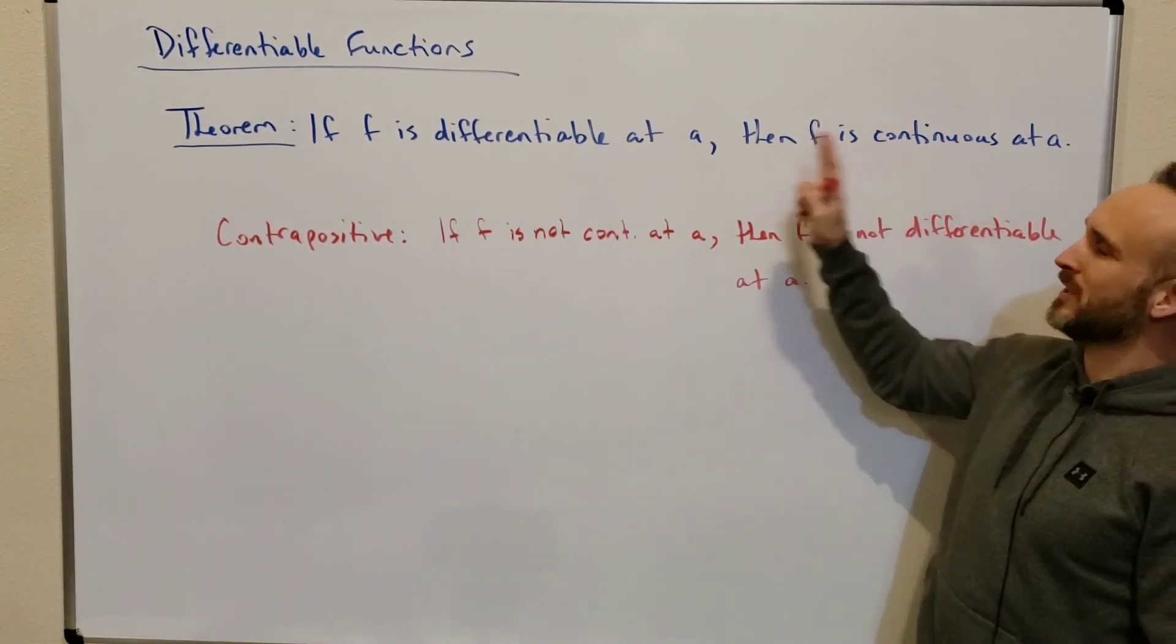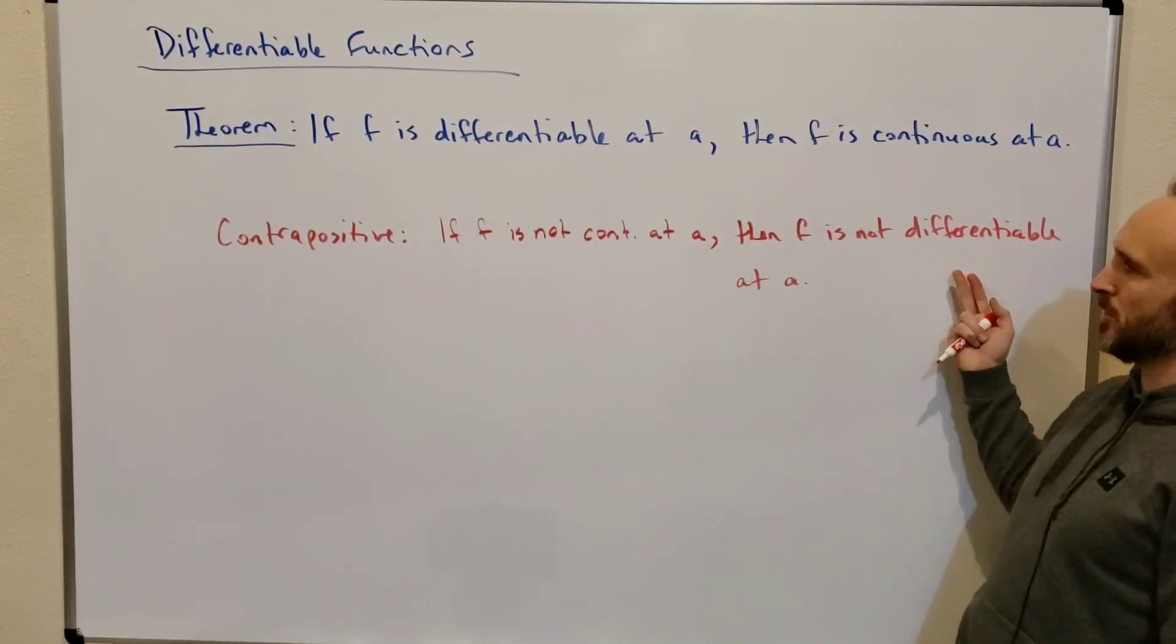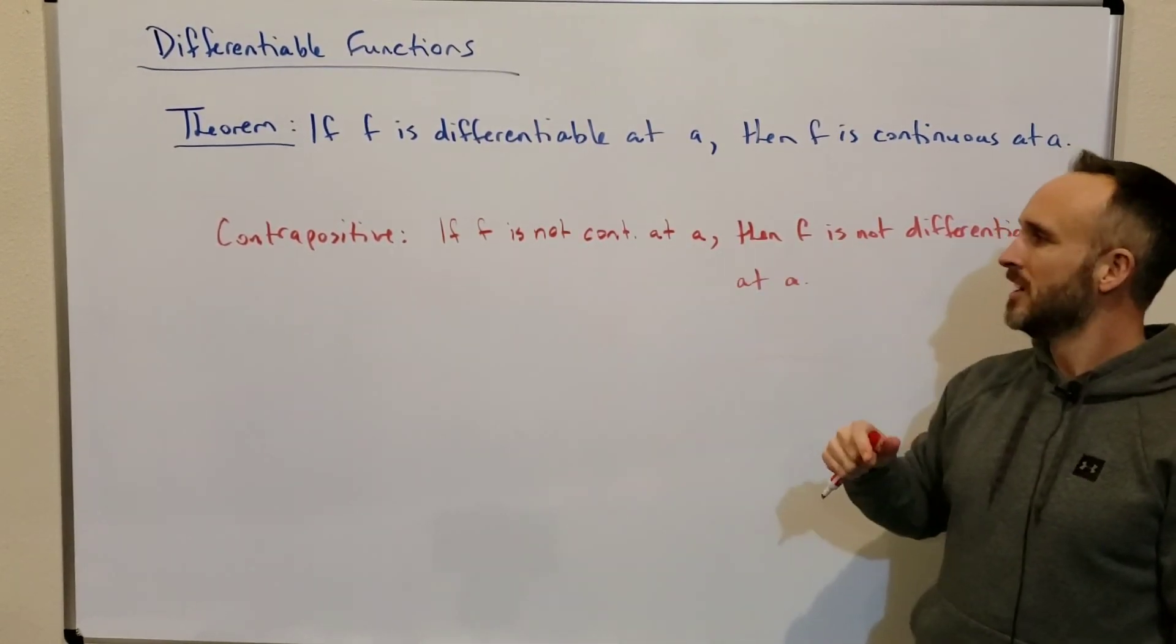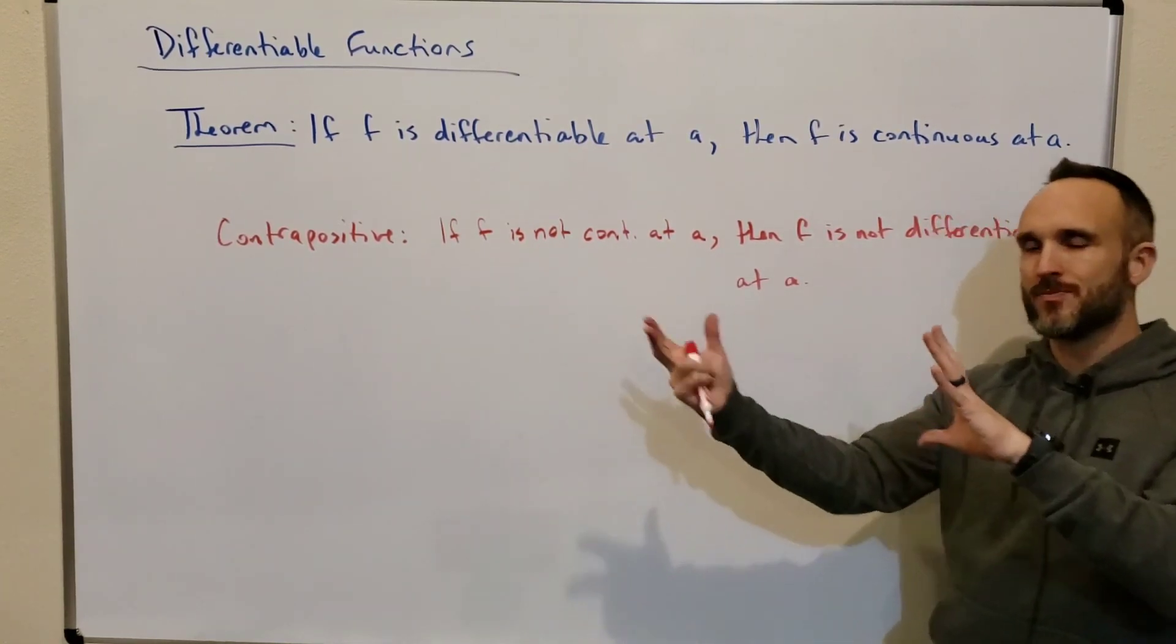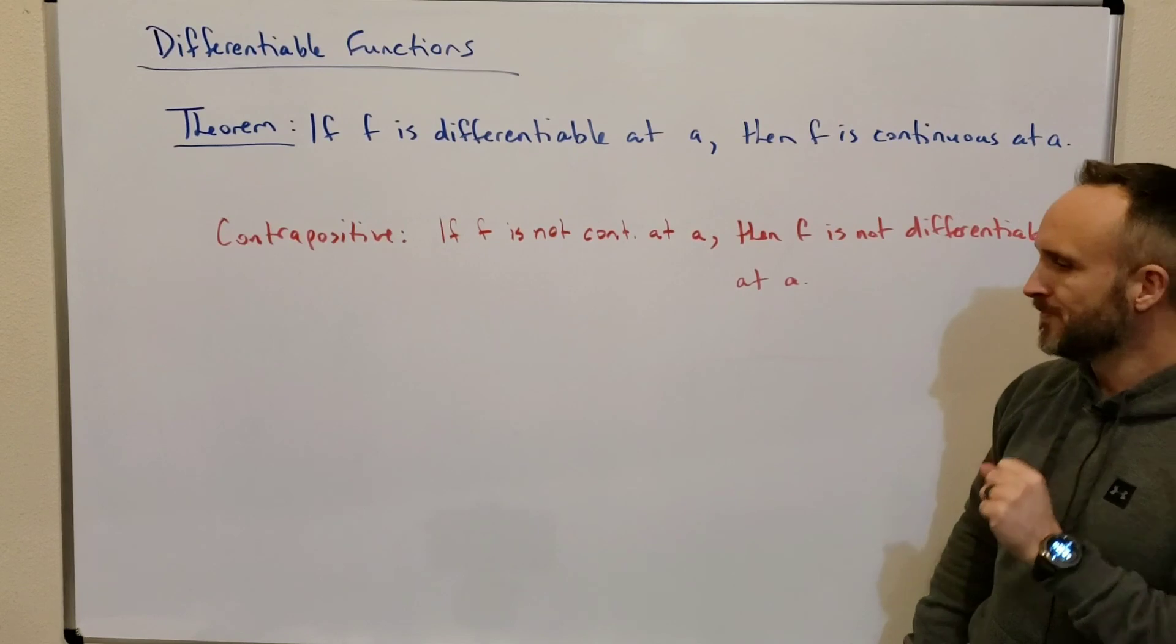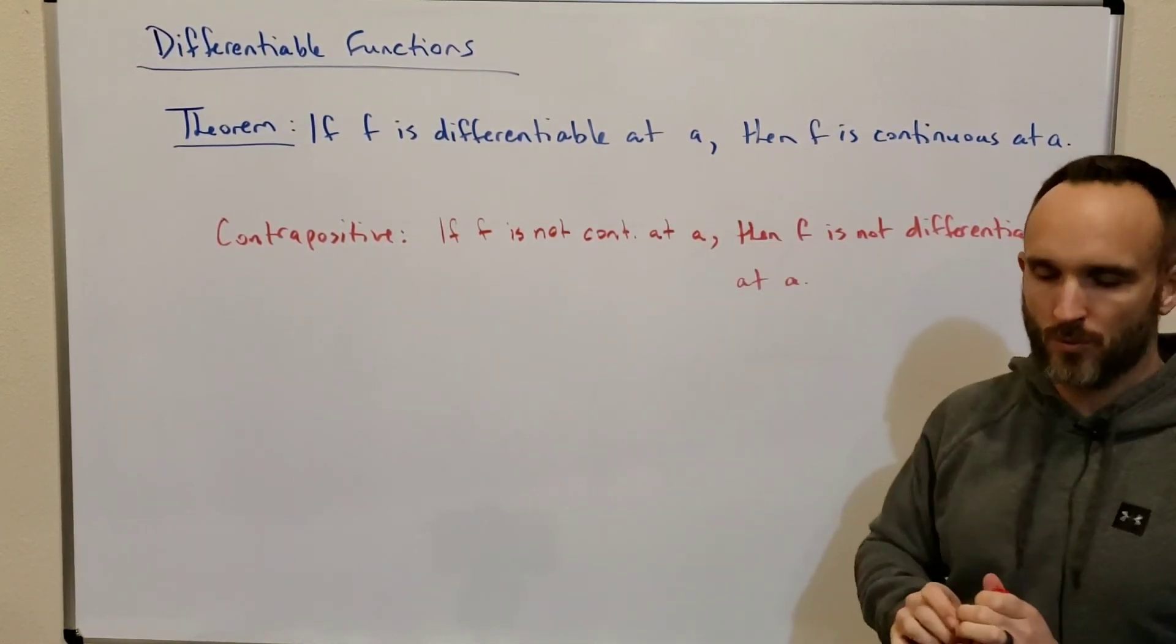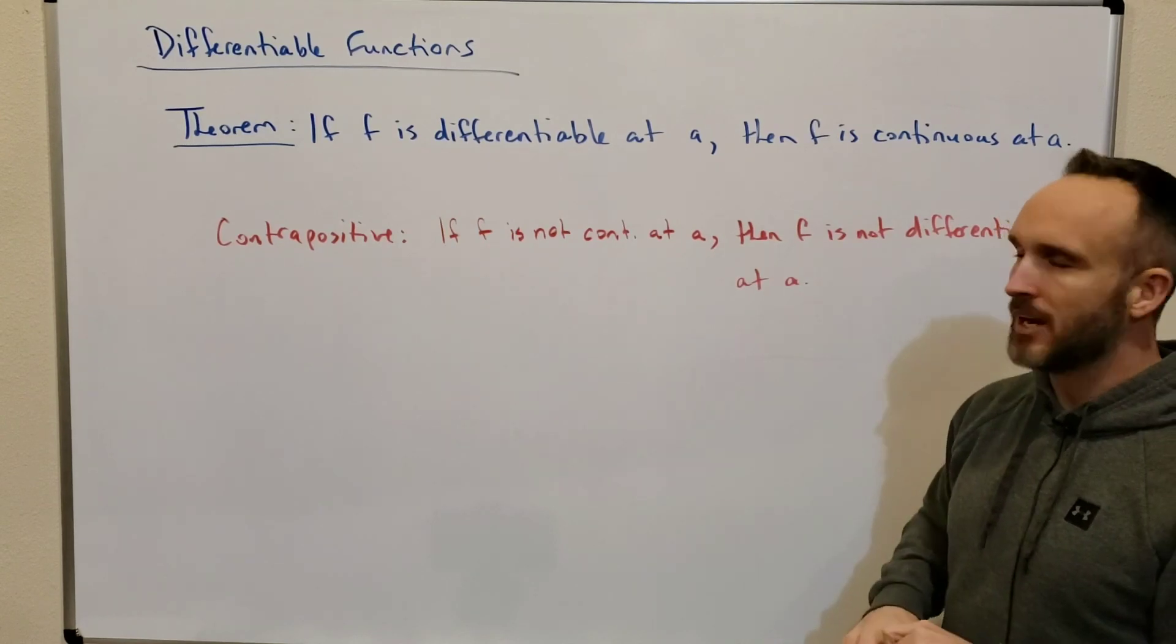So, we can show that a function is continuous if we can show it's differentiable. And, we can show that a function is not differentiable if we can show that it's not continuous. So, make sure you get the direction of this theorem and its contrapositive correct, okay? But, this is really important when we get further down into calculus.